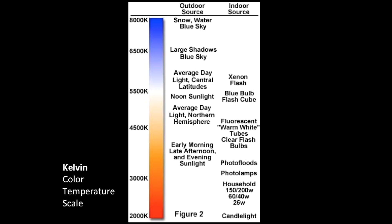The Kelvin scale is a color temperature scale represented by actual physical temperatures. To arrive at these temperatures, a black piece of metal is heated until it starts to change color — first red, then orange, yellow, white hot, and eventually blue hot. Those measured temperatures form the Kelvin scale, which is particularly important for electronic artists, interior architects, and photographers.